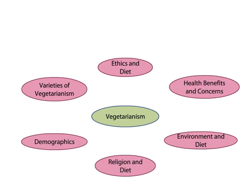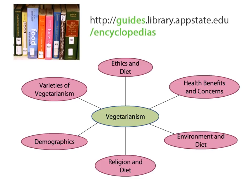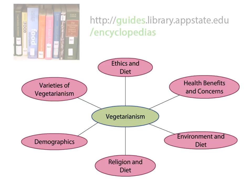The point of this first step is to identify issues that are related to my main topic, which I will represent with lines in the concept map. A good way to find related topics is by using an encyclopedia, such as the many that the library has available online, or even Wikipedia.